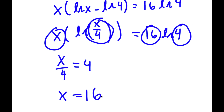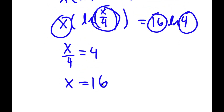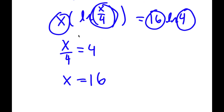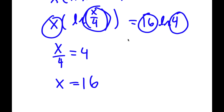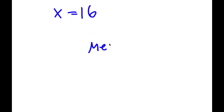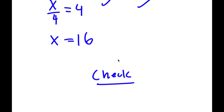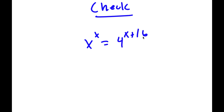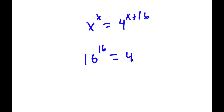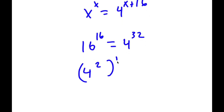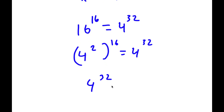These two have to match up as well. To check, plugging in x equals 16: 16 times ln of 16 divided by 4 is ln 4, so I get 16 times ln 4 is equal to 16 times ln 4. This works. For method 2 verification: 16 to the power of 16 should equal 4 to the power of 32. Since 16 is 4 squared, 4 squared to the power of 16 equals 4 to the power of 32, and 4 to the power of 32 equals 4 to the power of 32. Confirmed.